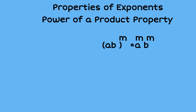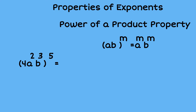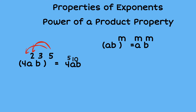The third property is the power of a product property. The first example is four times a squared times b cubed, that quantity all raised to the fifth power. We take that five and distribute it to every element in the parentheses. So that gives us four to the fifth power, a squared to the fifth power — which means we multiply exponents, giving a to the tenth — and then b cubed to the fifth, which becomes b to the fifteenth.